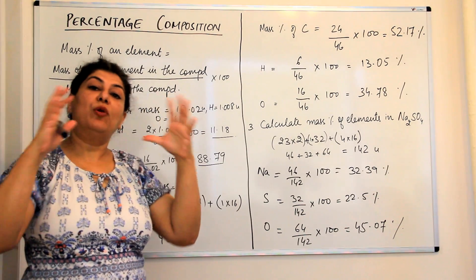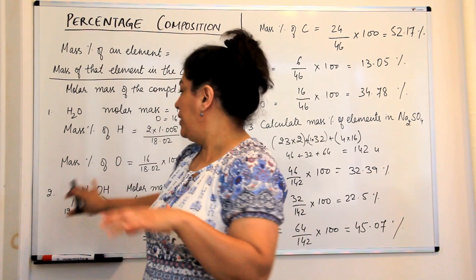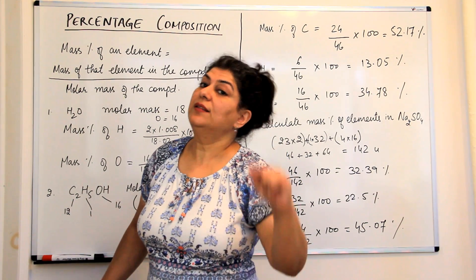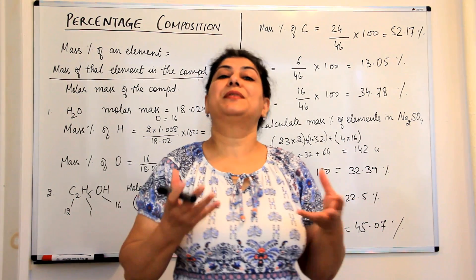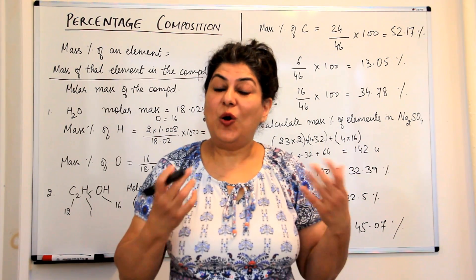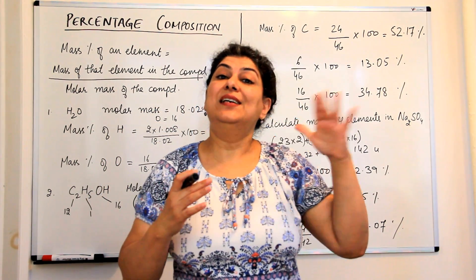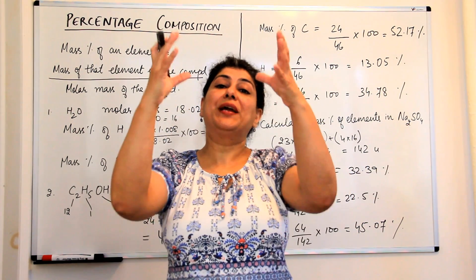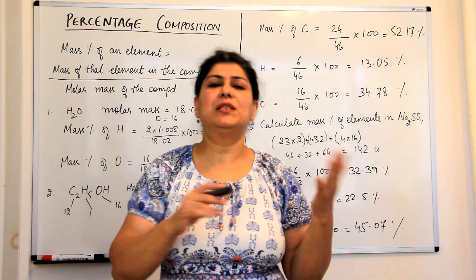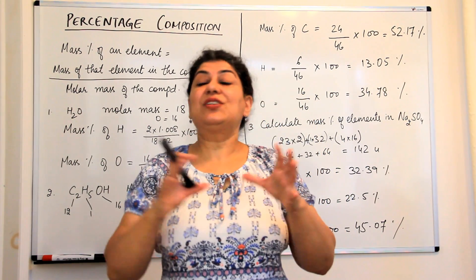In summary: take the masses of each element, find the molecular mass of the compound, then calculate each element's mass divided by molecular mass times 100 to get its percentage. Once you have the percentages, divide all of them by the smallest number to get the minimum ratio between the elements.